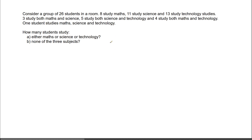In this video, I'm looking at this problem here, where we've studied a group of 26 students and asked them what subjects they are doing at school between math, science, and technology. We want to find out how many study maths or science or technology, or none of the three subjects. We're told that eight of them study maths, 11 study science, 13 study tech, and then it keeps getting broken down further for the different combinations.